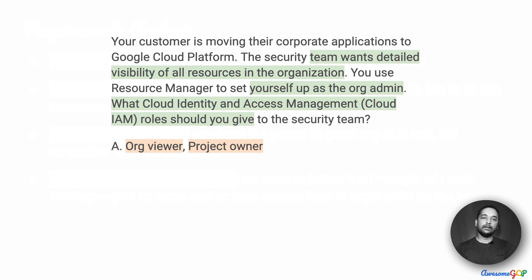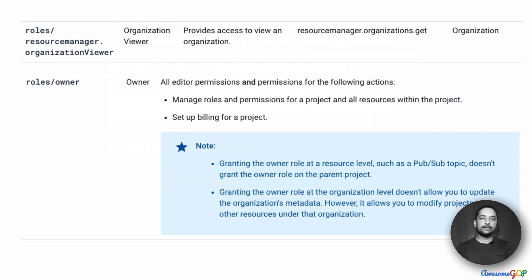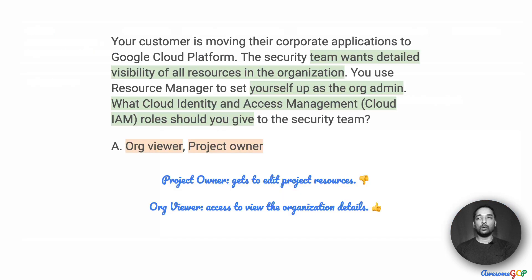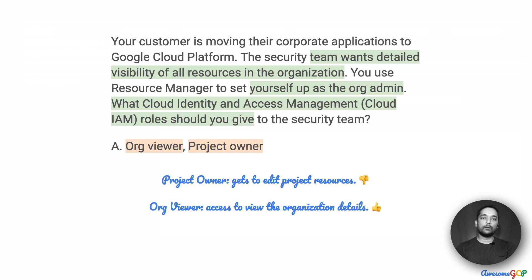Option A suggests that we give them org viewer and project owner. The org viewer is able to access or view the organization itself, which is a good starting point. But the owner role gives permissions to edit certain resource features — for example, they can manage the roles and permissions of the project. Therefore that is not something we want, since this team only needs read access and should not have edit access. So option A is not suitable.